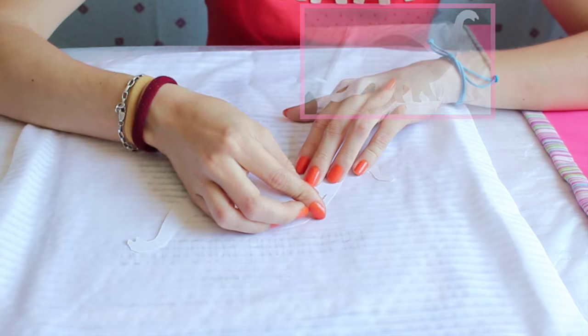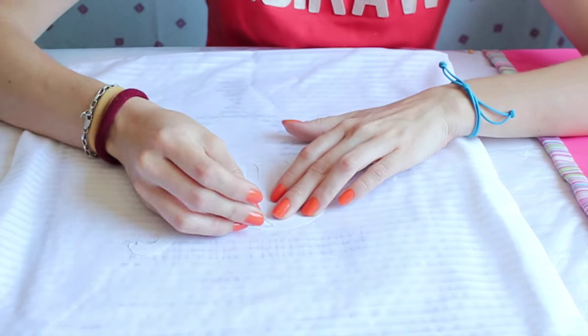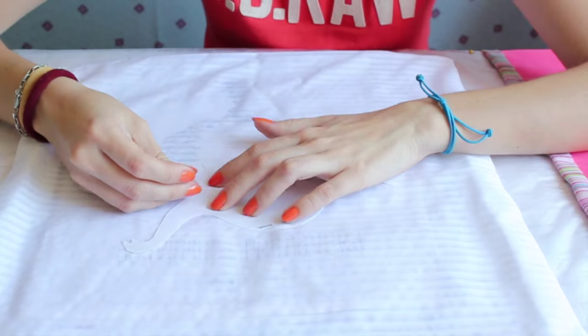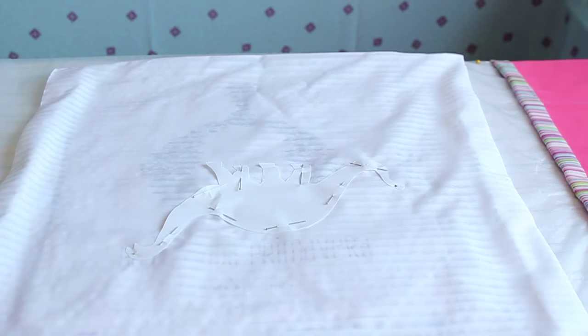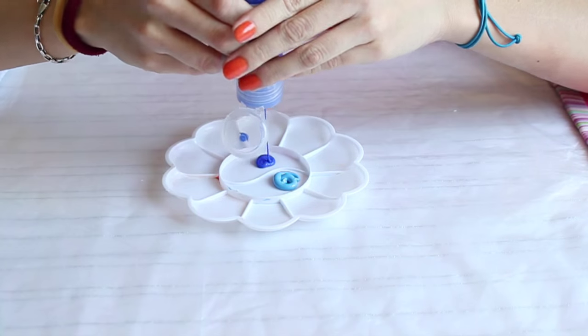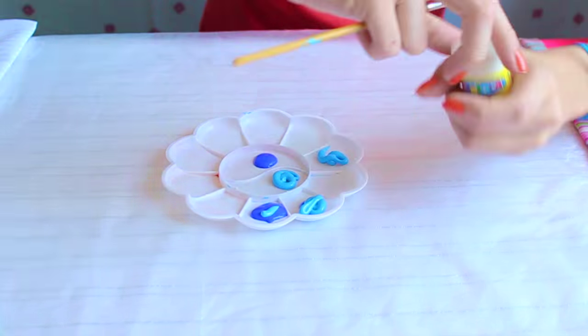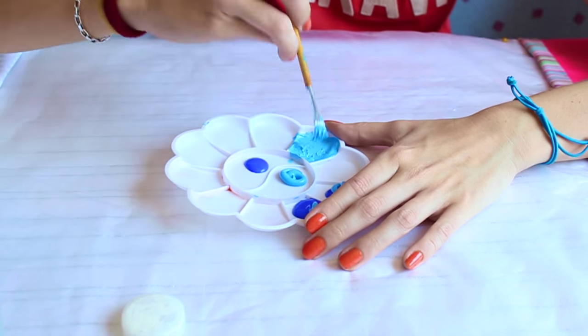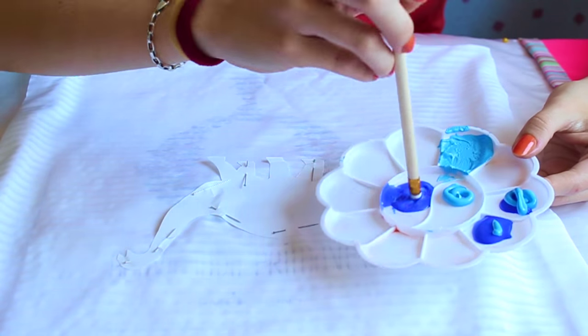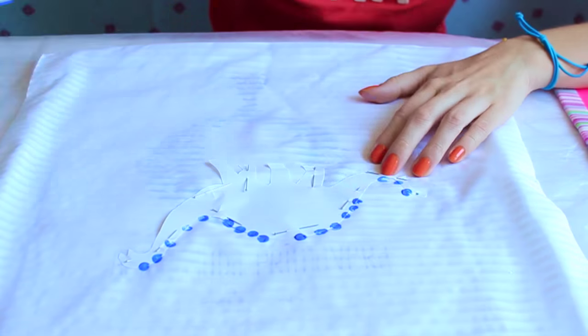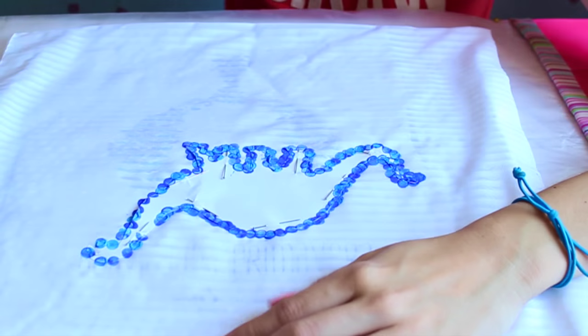The first step is to protect the back part with some newspaper, and then with some needles, pin the dino stencil wherever you want. Once you have it pinned, we're going to create the color shapes. Then, with the eraser of our pencil, we're going to start making dots all around the stencil, moving from the darkest color to the lighter one.